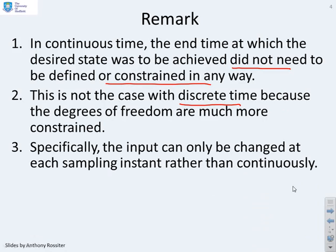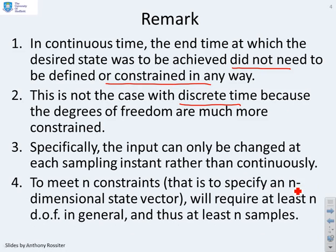The input can only be changed at each sampling instant. Therefore, to meet the n constraints associated to the state being at the specified point, and there being n states, you need at least an n dimensional number of degrees of freedom. So in general, you need at least n inputs.